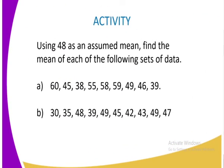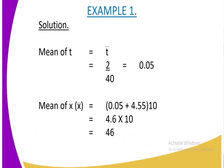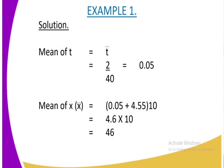Having said that, we are going to have the following activity. You are being told, using 48 as an assumed mean, find the mean of each of the following sets of data. To tackle this question, you are going to use the formula as I have indicated. The best thing is to formulate a table like this one, then it will be easy.